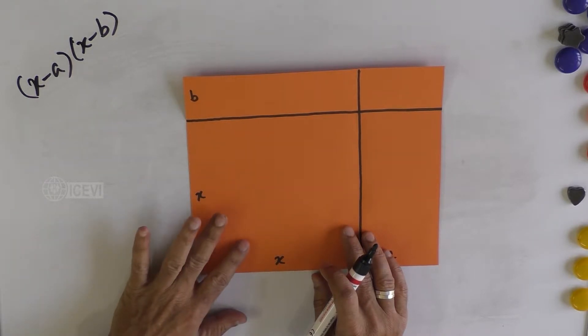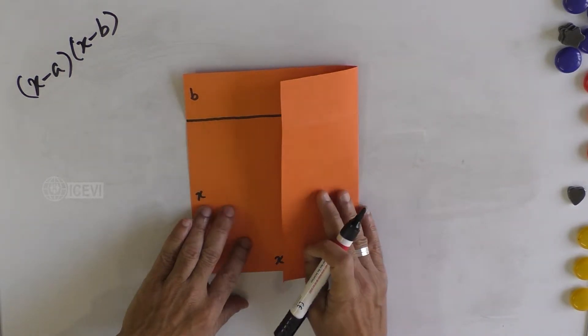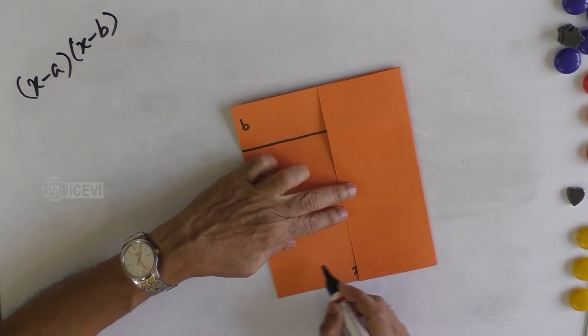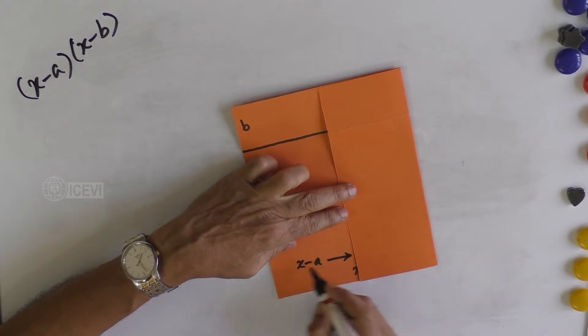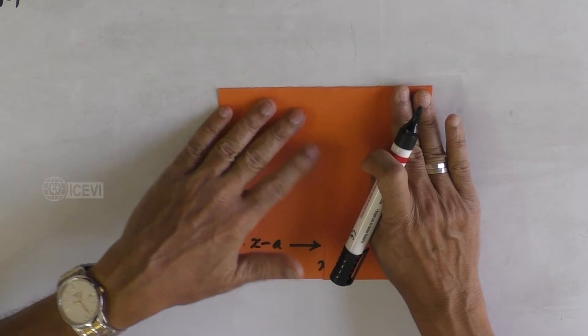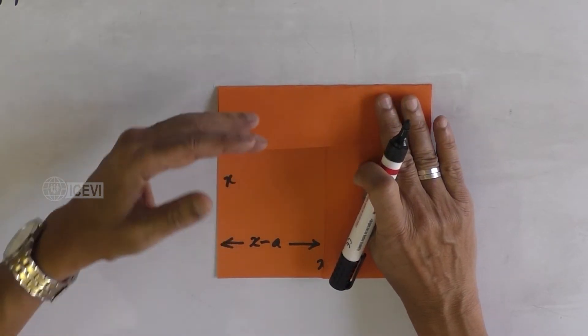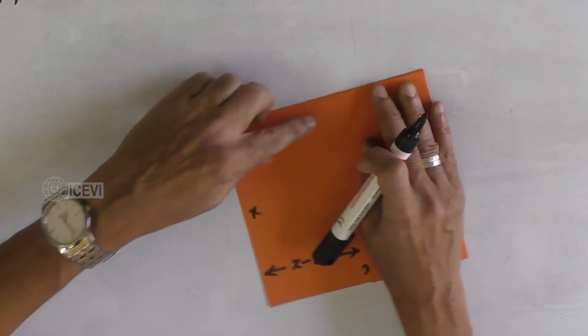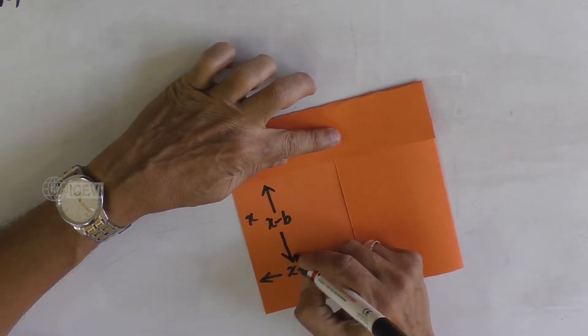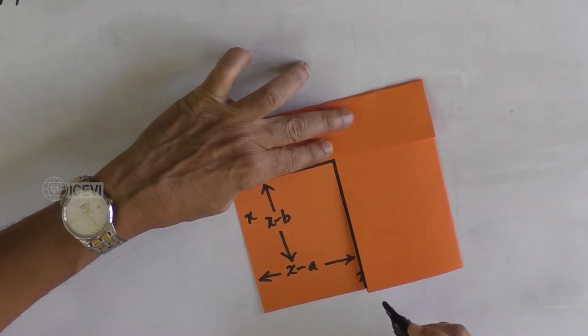You fold this small segment a inward towards the big segment X, and the remaining length is X minus a. Similarly, you fold the small segment B toward the big segment X inward, and you get the value X minus b. What we need is the inner rectangle.